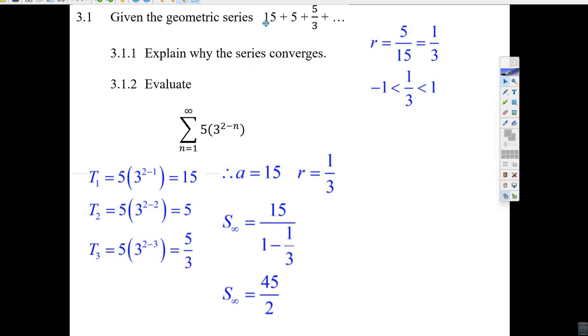Hey, this is the same geometric series. So the first term, A is 15. And R is 1 over 3.